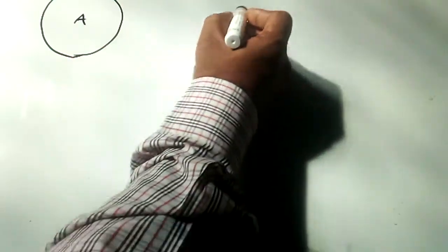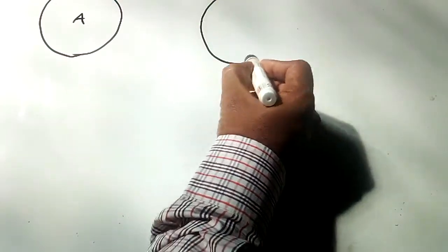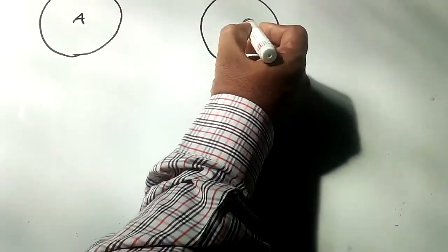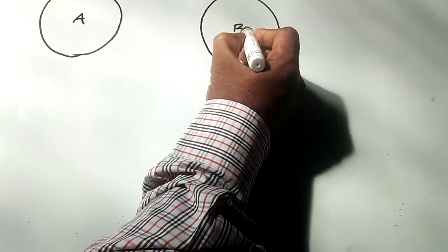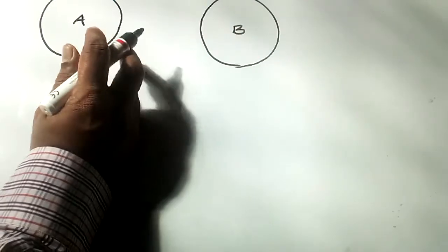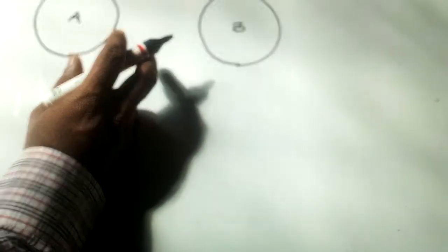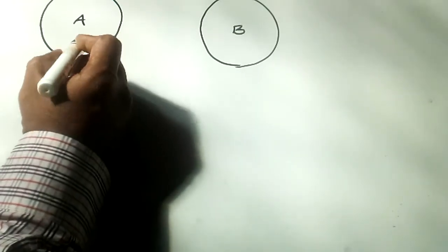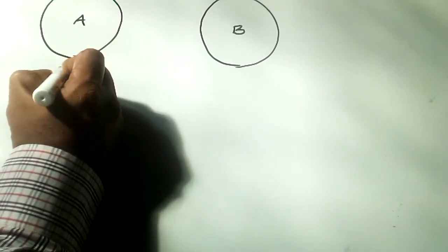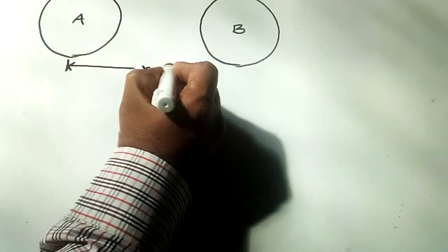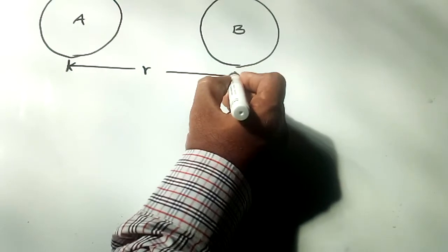Consider two charged spheres A and B. Both are isolated spheres with the same radius, separated by distance R, and both have charge Q.